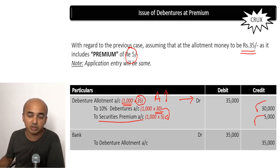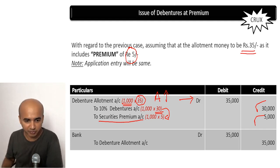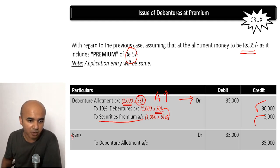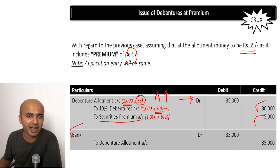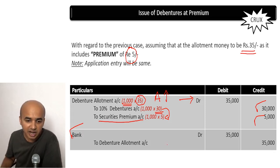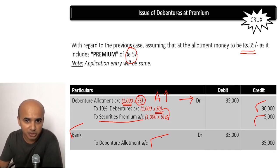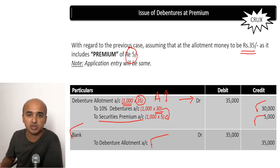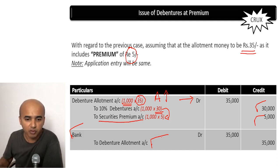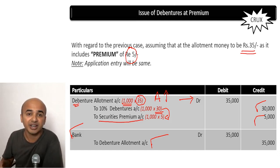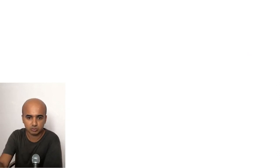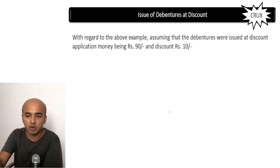So rupees 30,000 and rupees 5,000 are accounted for separately. Then comes the receipt entry: debit bank — a simple receipt entry, debit what comes in or debit increase in asset, and credit debenture allotment because we are supposed to receive money from debenture holders and now we have received it. Therefore we no longer need to carry this asset of debenture allotment account.